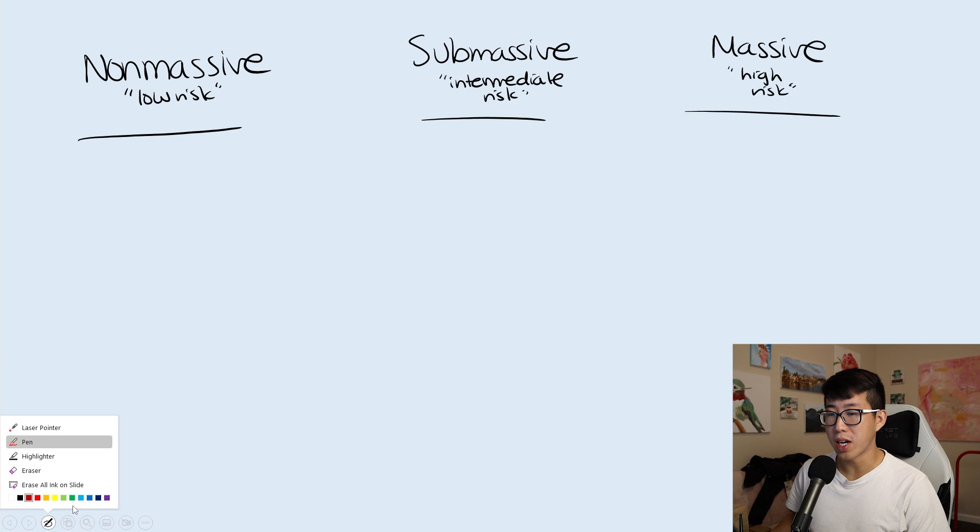Let's start directly with massive PE. What determines if a PE is massive or not? That's going to be if the patient is hemodynamically unstable. Obviously if it's non-massive, they're going to be hemodynamically stable.